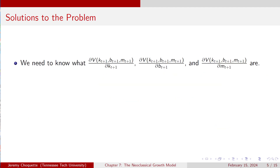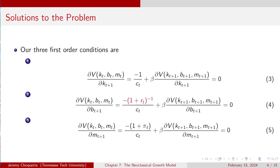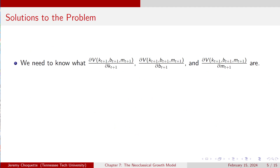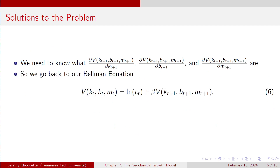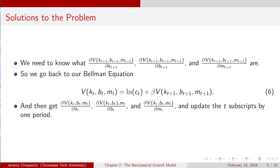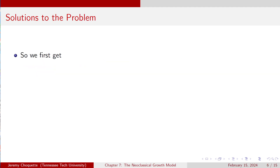We need to know what those derivatives are on the right-hand side of equations 3, 4, and 5. So we go back to our Bellman equation and take the derivative with respect to K_t, B_t, and M_t instead of K_{t+1}, B_{t+1}, and M_{t+1}. Once we get those derivatives, we update the T subscripts by one period.